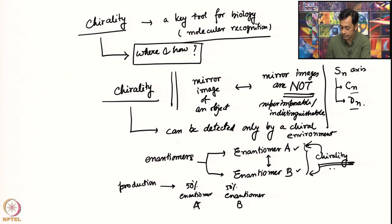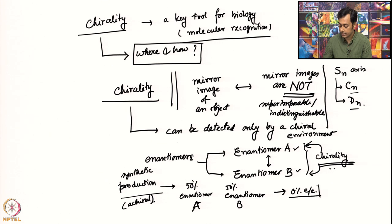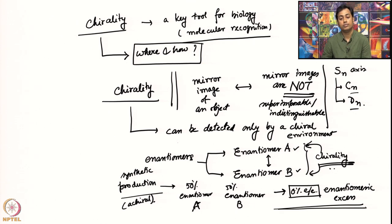You cannot avoid it; they will always be present 50/50. If you are doing that reaction in a synthetic system which is achiral in nature, what you are going to get is 0% enantiomeric excess — this is called the enantiomeric excess. You are not going to get any enantiomeric excess; both of them will be the same.